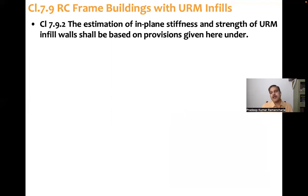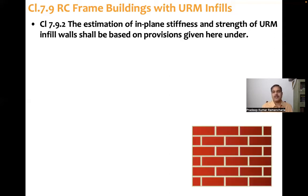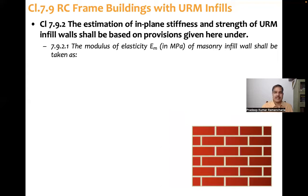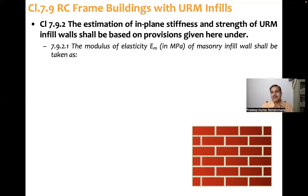To model infill walls, we need to understand in-plane strength and stiffness. Four items are required for modeling: first is material property, second is geometry — that is, the length, width, and thickness of the infill wall — and these are the three geometric properties. The last item is boundary conditions.